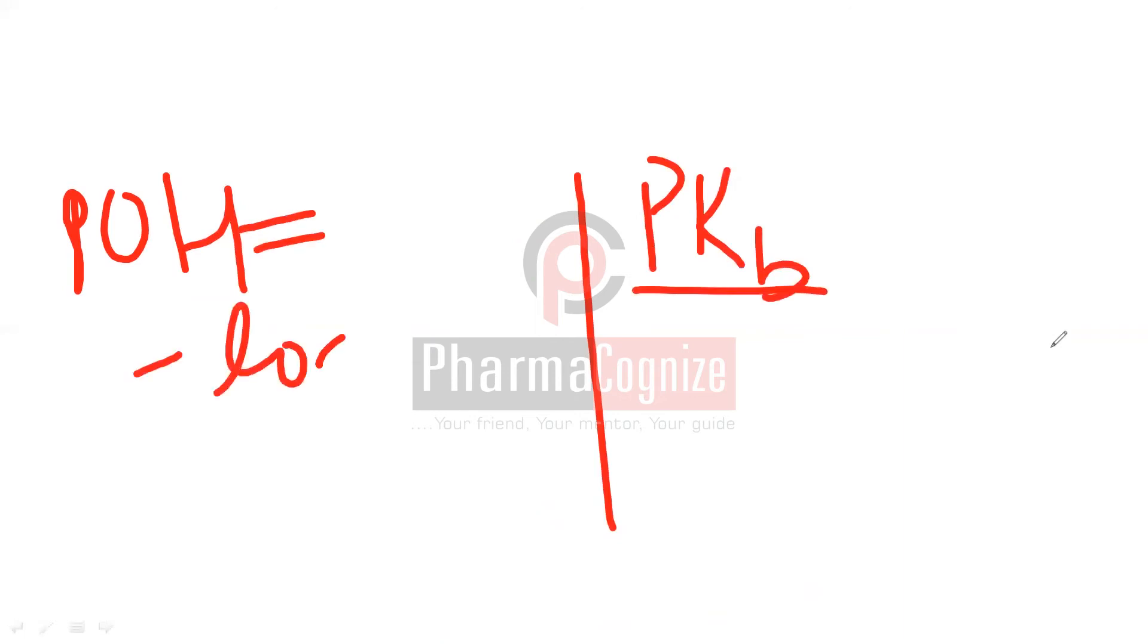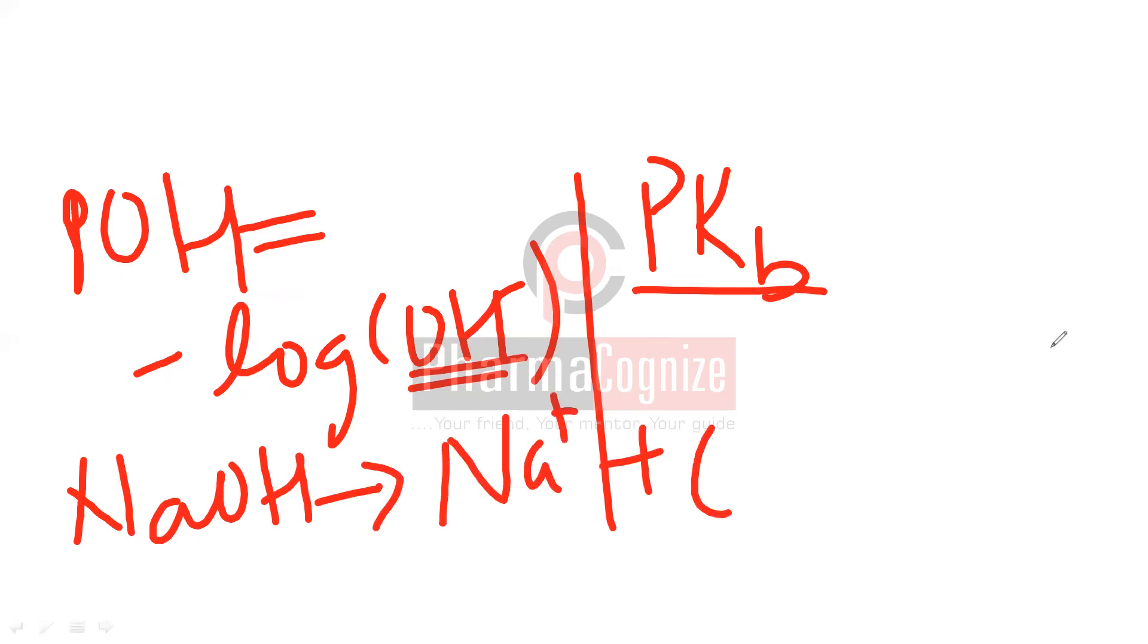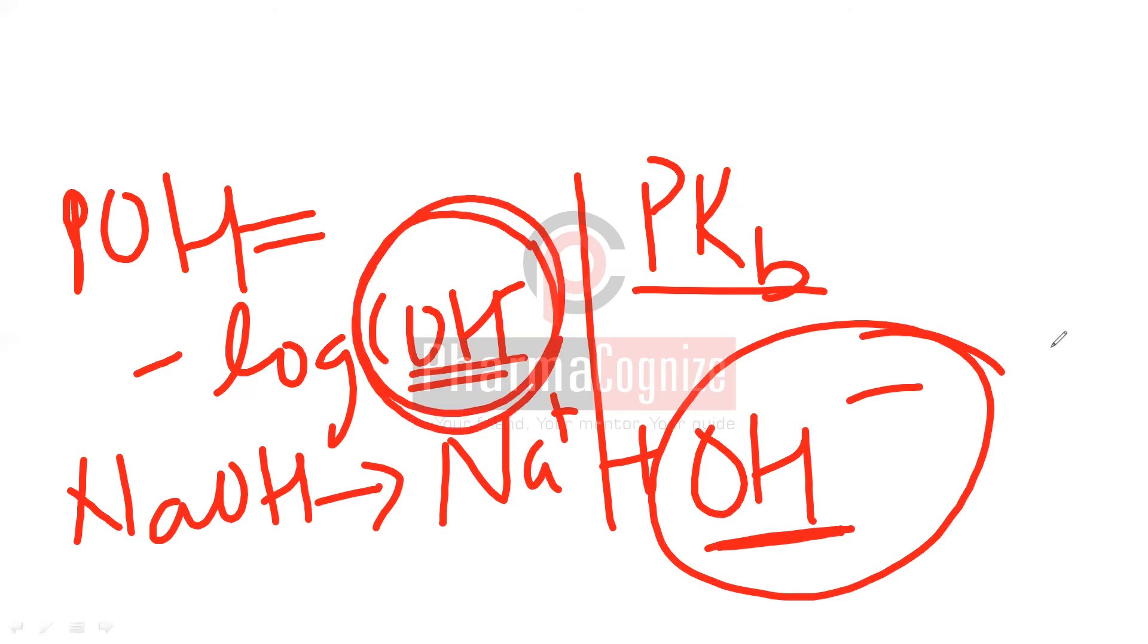Next comes the concept of pOH and pKb. pOH is minus log of OH minus concentration. So for a base, it will form cation plus OH minus. So this means what? It means the stronger the base, the more OH minus. That means pOH is less.